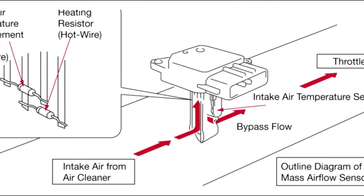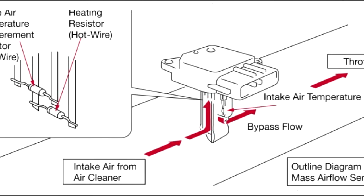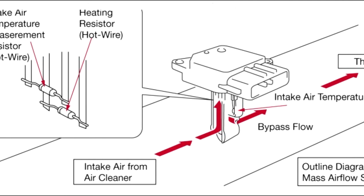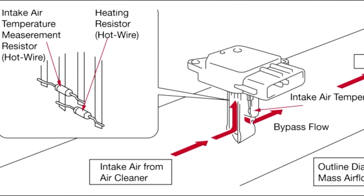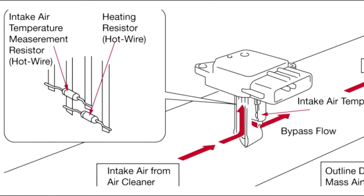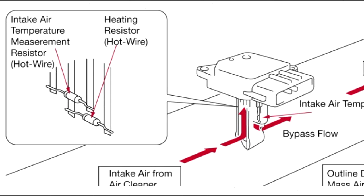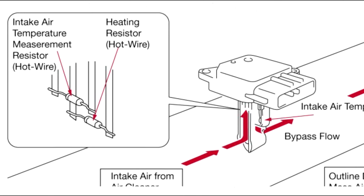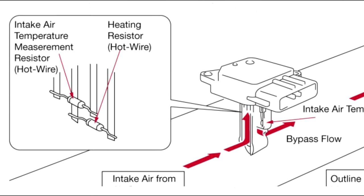The hot wire type mass airflow sensor responds to temperature changes in the heating element. Changes in the resistance value and current of the heating element are converted into proportional voltage in the control circuit, and then sent to the electronic control unit to calculate the amount of engine intake air volume.